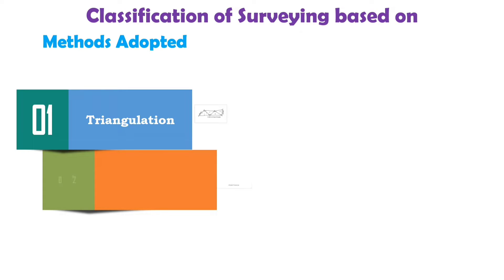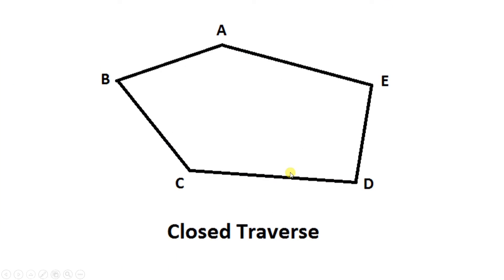The second method is called traversing. The traversing method involves a circuit of survey lines. A traverse is a closed or open figure made up of a series of connected lines. When linear measurements are done with the help of chain and tape, and directions are measured by compass or theodolite, this kind of survey is used and is called traverse survey.